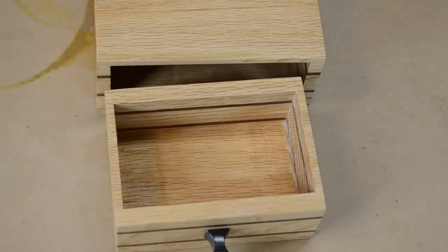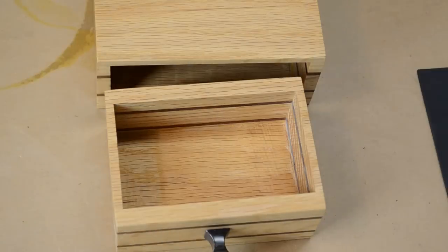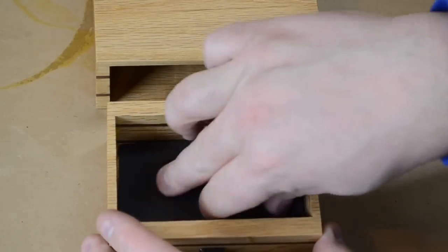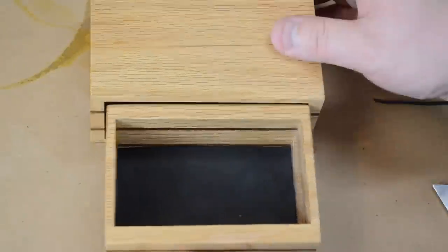I had a thin piece of black foam left over from another project so I just basically cut it down to size, threw on a couple dabs of wood glue and pressed it in place. That was going to act as a nice little drawer liner.